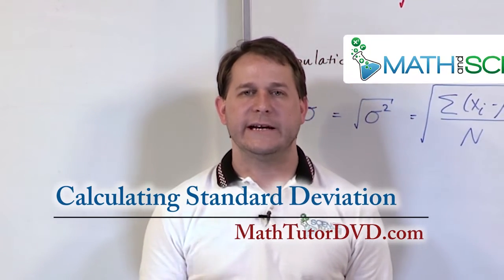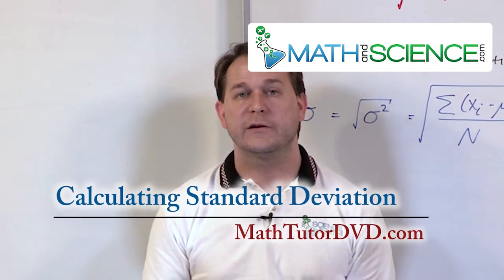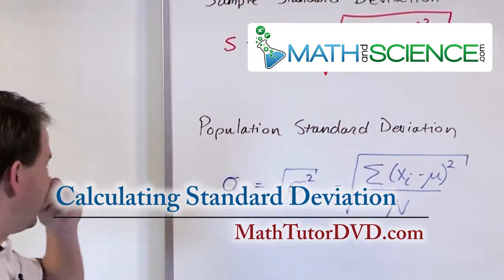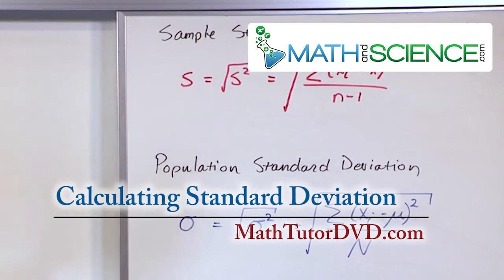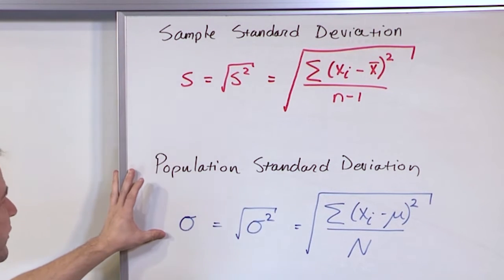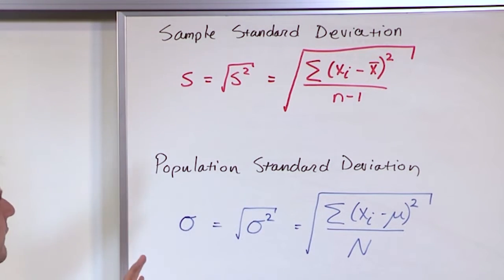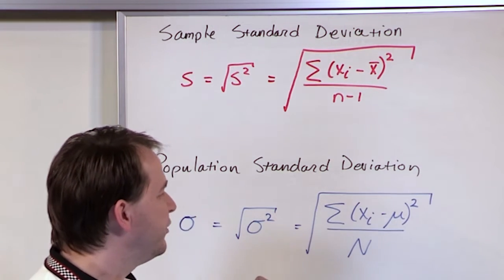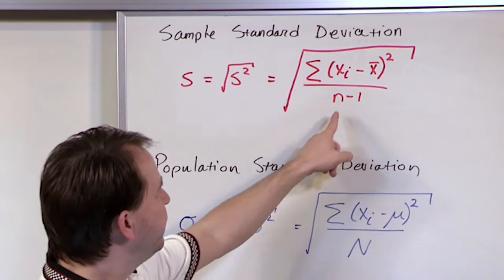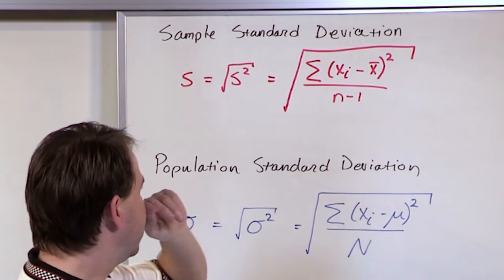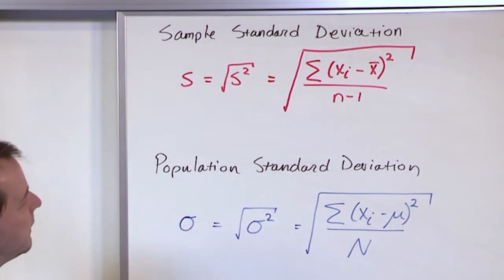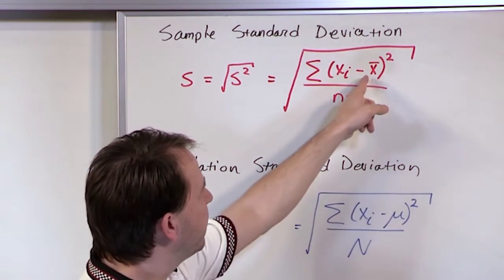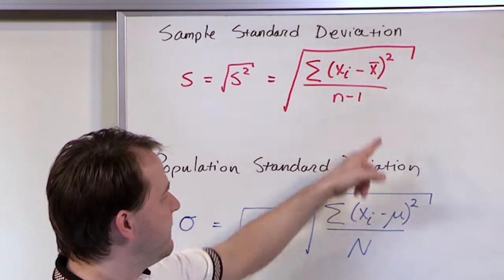Here we're going to get practice with calculating the standard deviation, which we've talked about before in the last lesson. So just to remind yourself, this is what we've written down before — this is the sample standard deviation, this is the population standard deviation. The only real difference between the two is you have the number of elements in your population for the population standard deviation, but you subtract one if you're dealing with a sample. Everything else is cosmetic — the symbols are different but they both represent the mean.